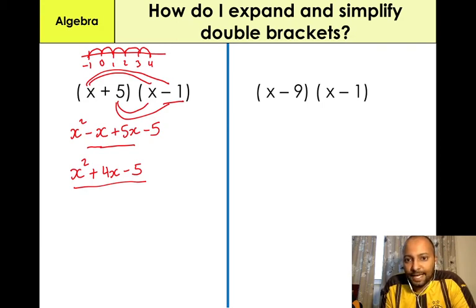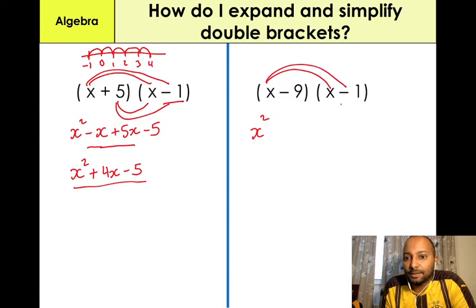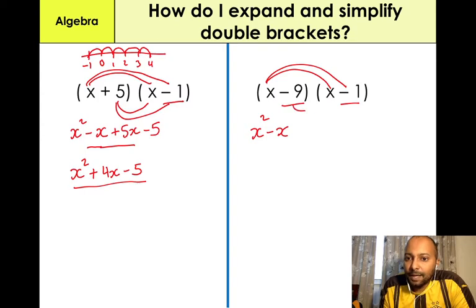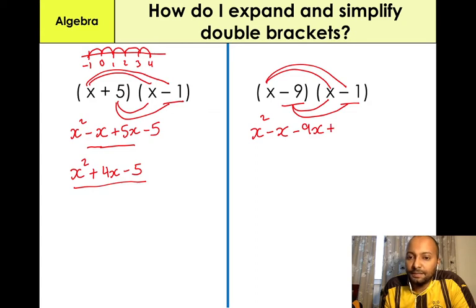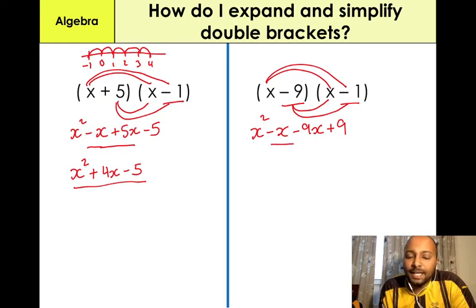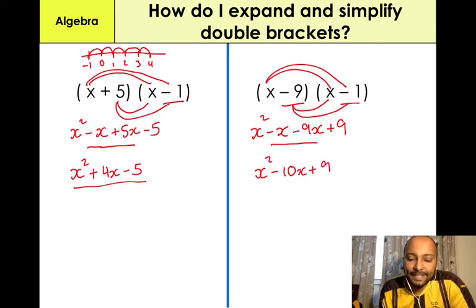Our fourth example, using the FOIL method: X times X gives us X squared. Then X times negative 1 gives us minus 1X. And then negative 9 multiplied by X, which is minus 9X. Then negative 9 multiplied by negative 1 — a negative times a negative gives us a positive — positive 9. Simplifying: minus 1X minus 9X gives us minus 10X plus 9. Our overall answer is X squared minus 10X plus 9.